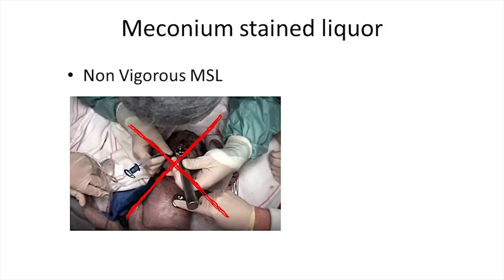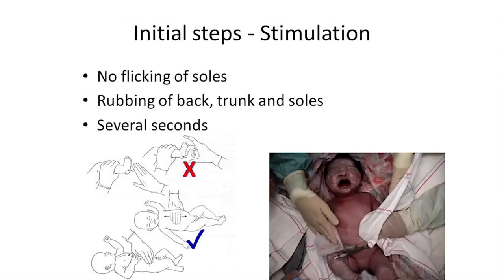Regarding meconium-stained liquor: as per new guidelines, irrespective of whether the baby is vigorous or non-vigorous, endotracheal suctioning is not required. For stimulation, there is no flicking of soles — only gentle rubbing of the back is recommended.